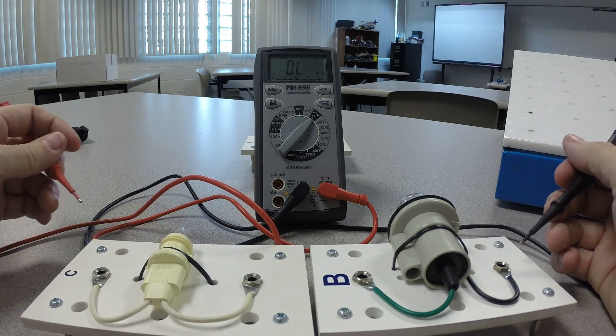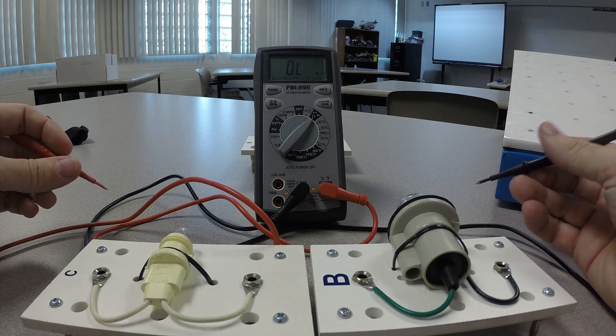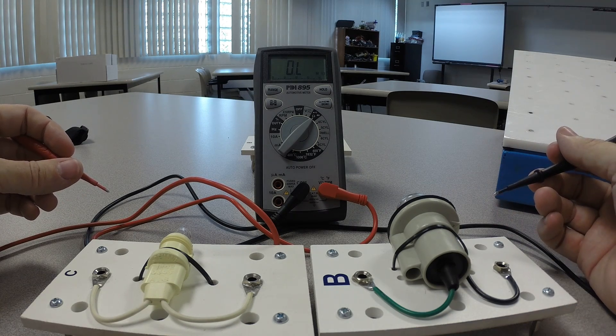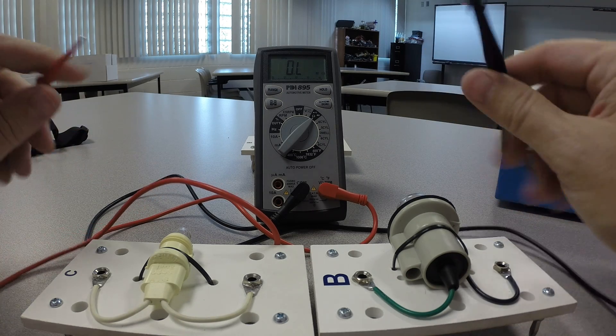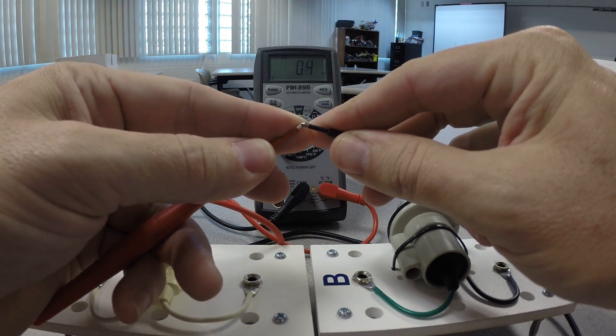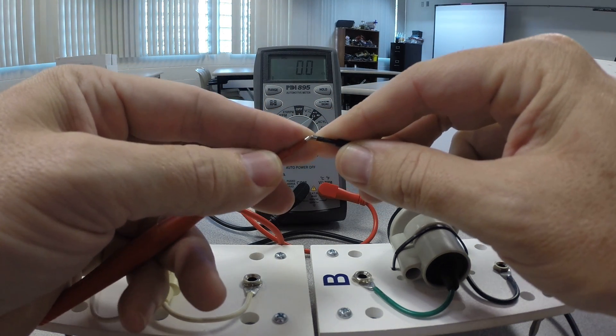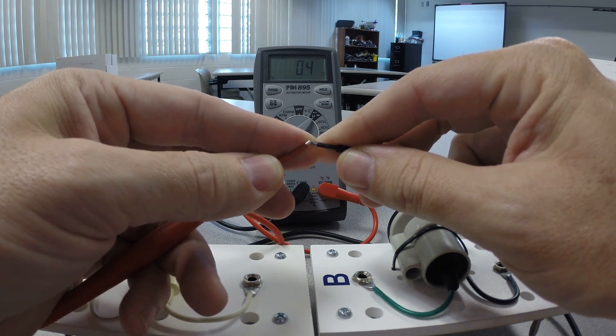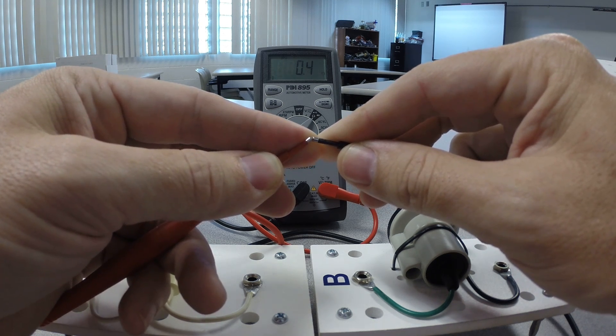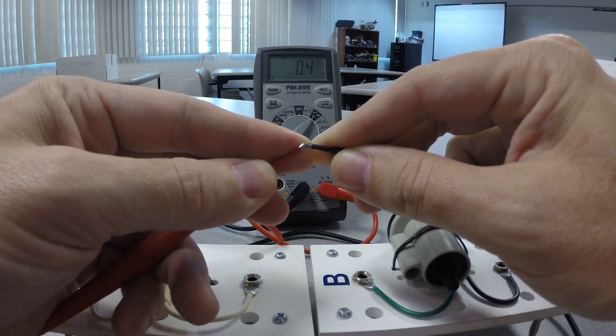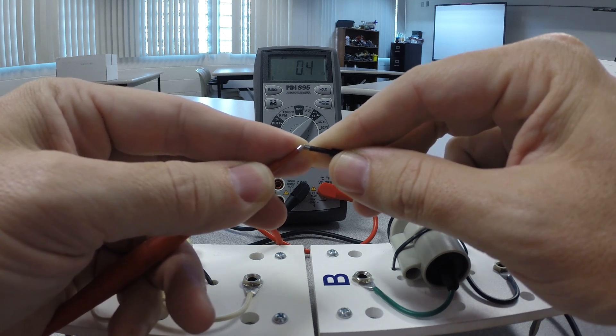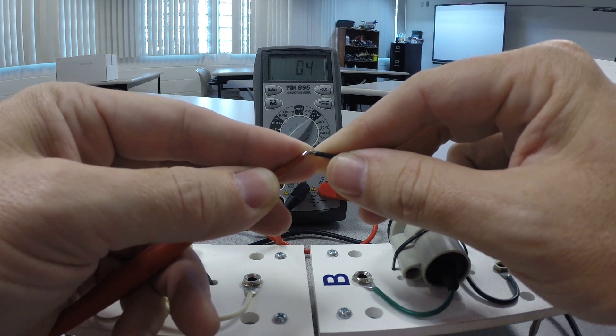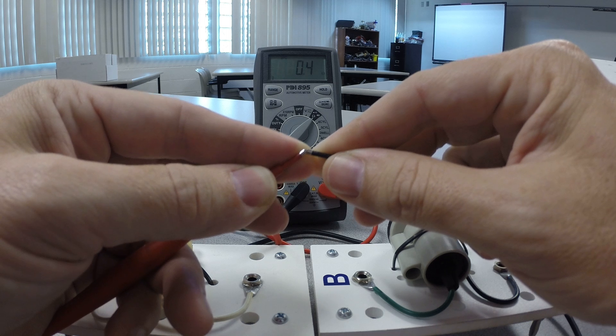Now if this bulb was burned out, what we would see is this. We would see OL because the filament would be broken. There would be no path for that little bit of current that comes from the meter to return, and we would just see OL. If we touch the ends of the leads together, then we get essentially zero ohms. Sometimes it kind of fluctuates between something real low. But that means no resistance. Now we should never get zero ohms confused with OL, because OL literally means infinite resistance. Some people say OL stands for over limit or maybe out of luck, but it means infinite resistance.